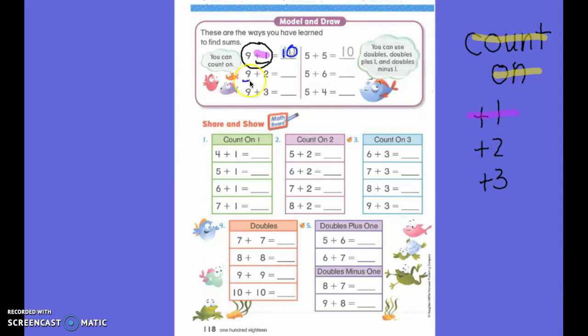My next addition problem is a count on again. Because I have plus 2. So 9, and then I hop 2 more. 1, 2. What number do I land on? 11. So my sum is 11. What strategy is this? A count on. It is another count on.